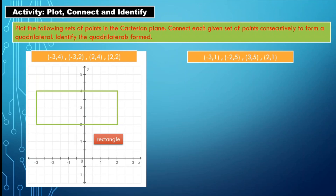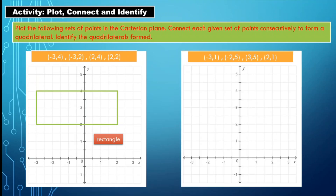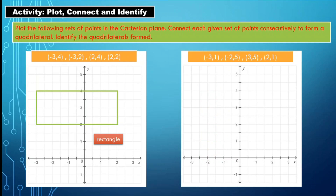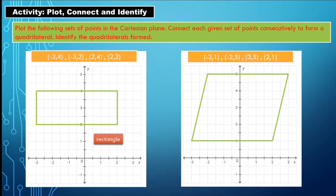Number six: points at (−3, 1), (−2, 5), (3, 5), and (2, 1). Locating (−3, 1) as the first point, (−2, 5) as the second, (3, 5) as the third, and (2, 1) as the last, then connecting them — what quadrilateral is formed? Yes, that is a parallelogram. Very good.